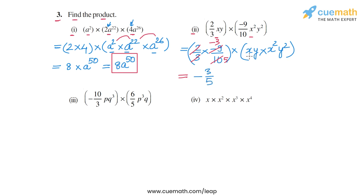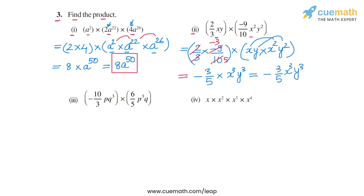For the variable parts: x × x² = x³ and y × y² = y³. So we get x³y³. The final product is −(3/5)x³y³. This is the answer for part 2.